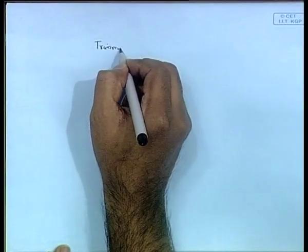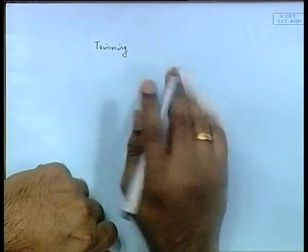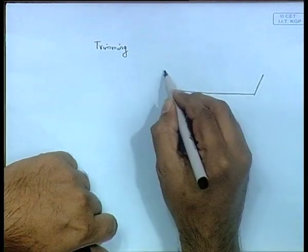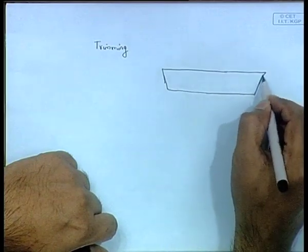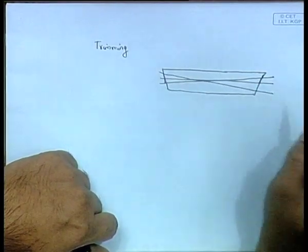Today we will go into trimming. Till now we have been talking about heeling mostly, so this chapter is on trimming. Trimming is defined as the longitudinal heeling of the ship. If the ship is initially upright and goes in either direction longitudinally, we call it trimming.